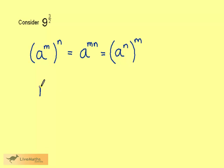Consider now that 9 to the power of 3 over 2 is the same as 9 to the power of 3 times 1 half. 3 times 1 half is 3 over 2.